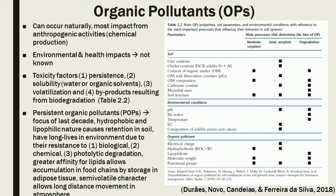OPS can occur naturally or from anthropogenic sources such as production of chemical compounds. For many of these chemicals, the environmental and health impacts are not even known. The most important factors regarding OPS toxicity are: 1. persistence, 2. solubility, 3. volatilization, and the byproducts resulting from their biodegradation. Table 2.2 summarizes the main properties that control the behavior of OPS in various soil processes that determine the fate of organic pollutants.